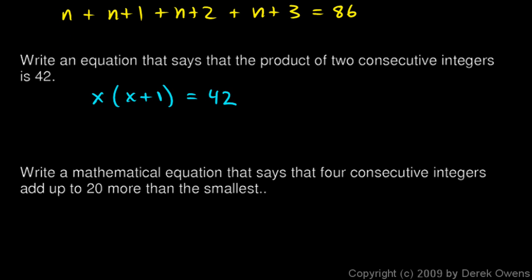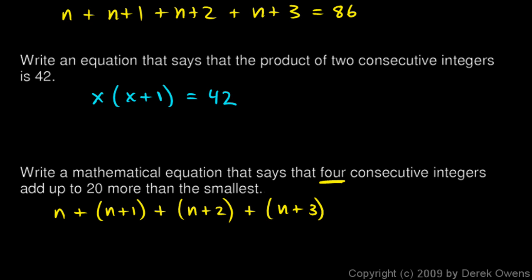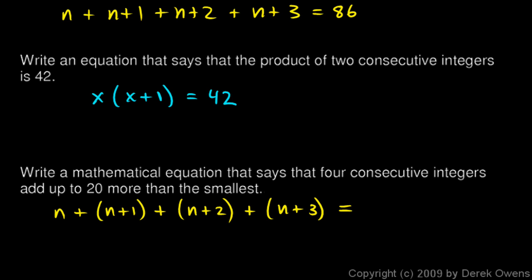One more: write a mathematical equation that says that four consecutive integers add up to 20 more than the smallest. So, we have n + (n+1) + (n+2) + (n+3). We don't go out to n+4, even though it says 4 — n is the first, n+1 is the second, n+2 is the third, and n+3 is the fourth. They add up to 20 more than the smallest. Since n is the smallest, 20 more than the smallest is n + 20. So, n + (n+1) + (n+2) + (n+3) = n + 20.